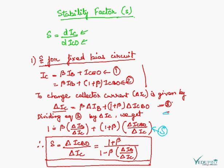So for each circuit, if we calculate delta IB upon delta IC, the relation between IB and IC, we can calculate the stability factor of that circuit biasing circuit. 1 plus beta and 1 minus beta are the constants; only the variable parameter is delta IB by delta IC.